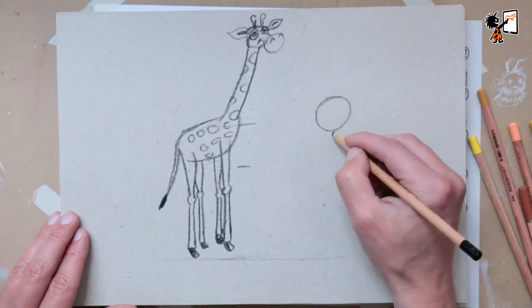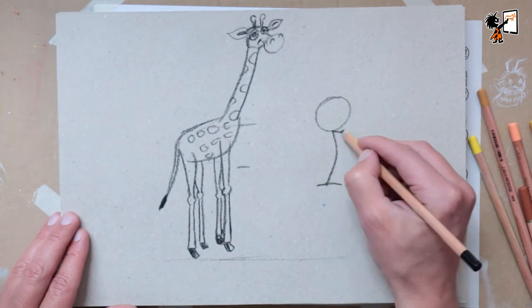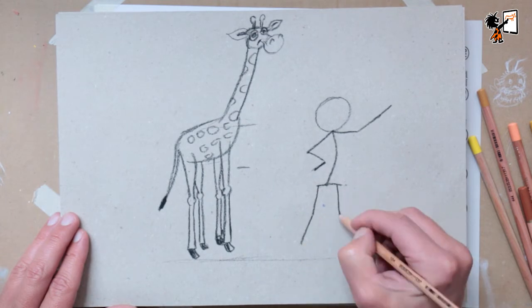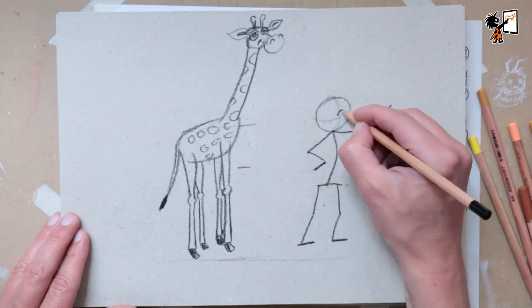Tip number four. If you want to draw a pose of a character, first draw the character in a stick figure. After that, you can finish it and add the details.